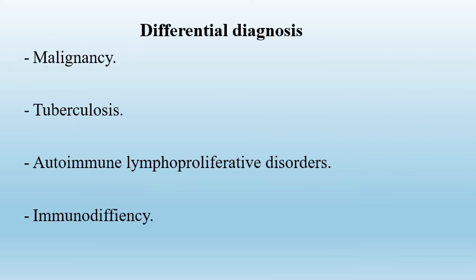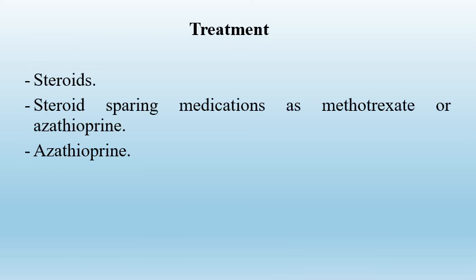Differential diagnoses include malignancies such as lymphoma, tuberculosis, autoimmune lymphoproliferative disorders, and immunodeficiency. Treatment of sarcoidosis includes steroids to suppress the inflammation and steroid-sparing medications such as methotrexate or azathioprine.